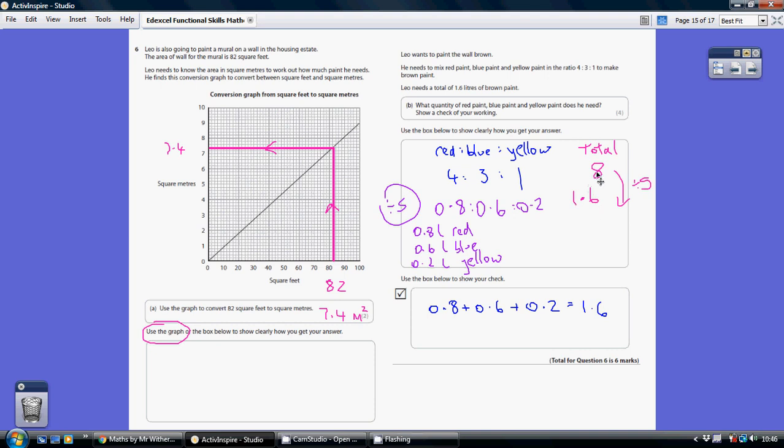Now how proportionally do we get from 8 to 1.6? Well, if you do 8 divided by 1.6, you get 5 on your calculator. So we've got to scale all of these down by 5. We've got to make them 5 times smaller. Making 8 five times smaller, we get our 1.6. So we've got to divide each of these numbers, each of these ratios by 5 to get the number of liters of each of these paints that we need.